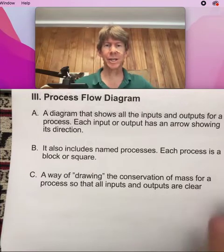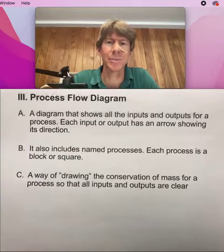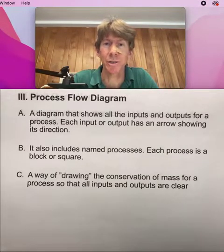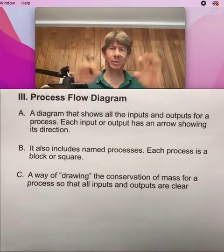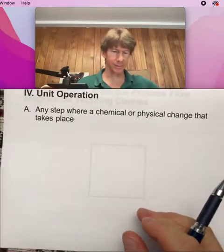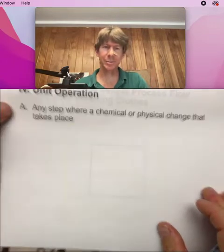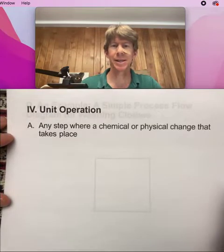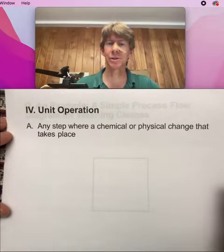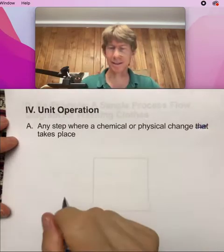The next term I want to discuss is what's called a process flow diagram. This is a diagram that shows all the inputs and outputs for a process, each with an arrow showing its direction so you can tell which is which. It also includes named processes — we'll go through several, as simple as a washer and a dryer. A unit operation is any step in a process where a chemical or physical change takes place.